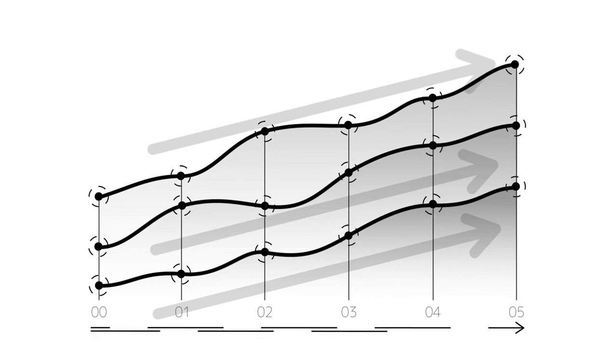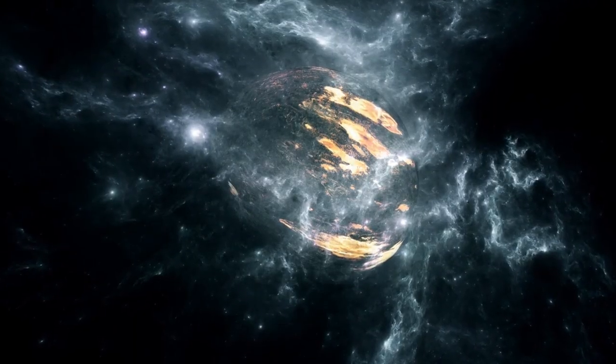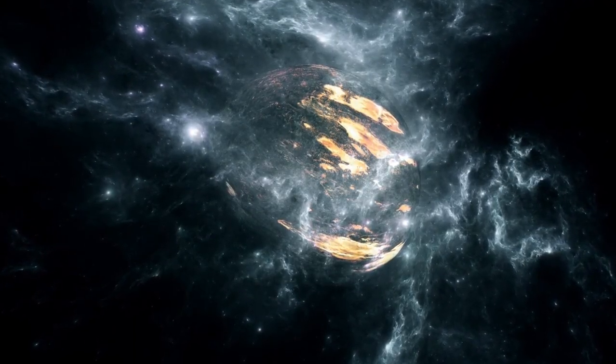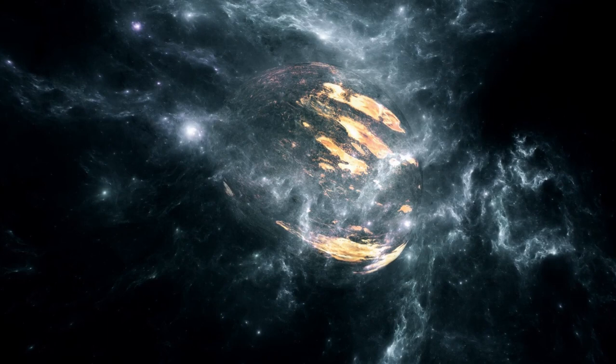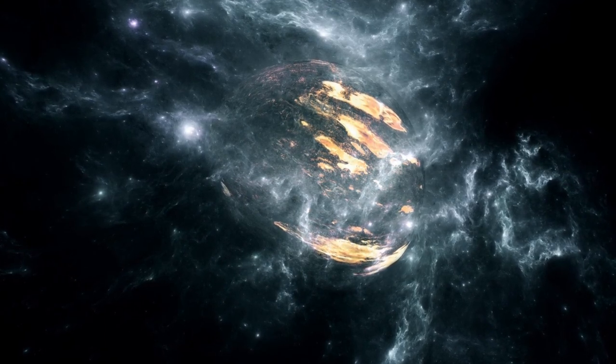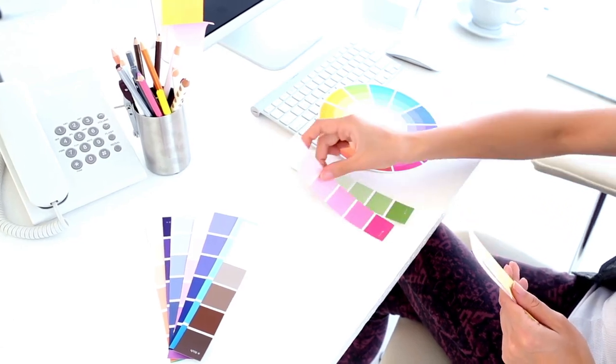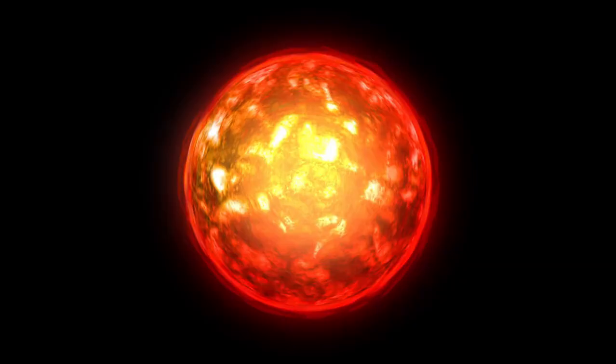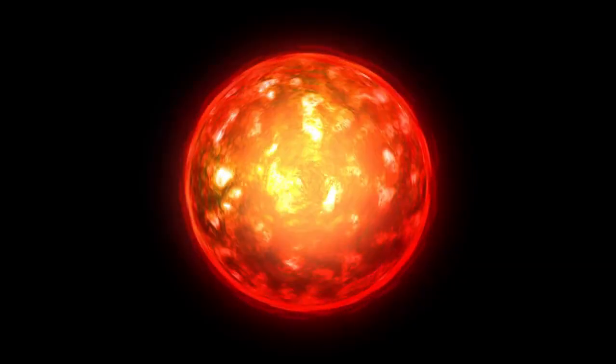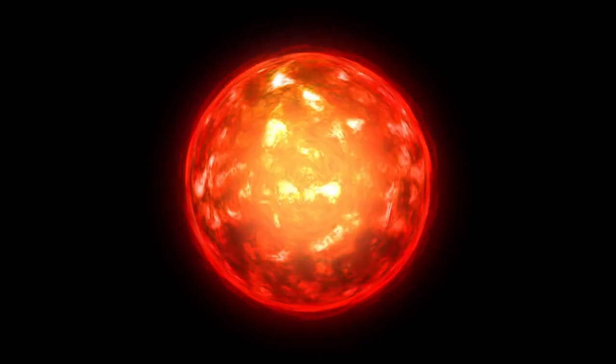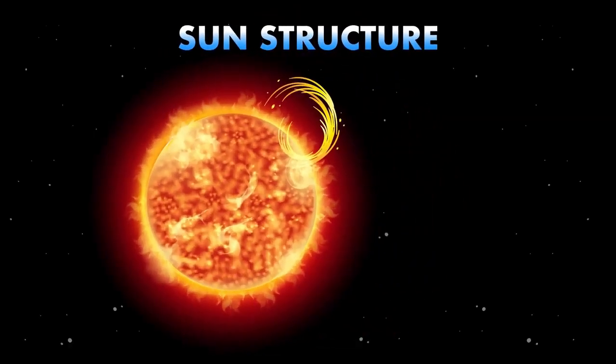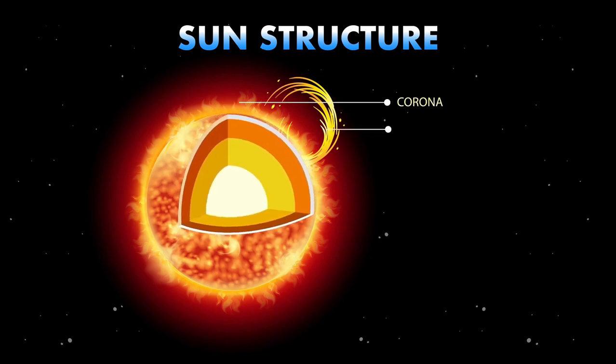Regarding the possibility of a Betelgeuse supernova, astronomers speculate that it could occur at any time within the next 10,000 to 100,000 years. Based on factors such as the star's color, brightness, size, and estimated age, scientists suggest that Betelgeuse is currently in the early stages of helium-to-carbon fusion. This process must continue through oxygen, silicon, and finally iron before the star's core collapses under its own gravitational pull, leading to a cataclysmic explosion.